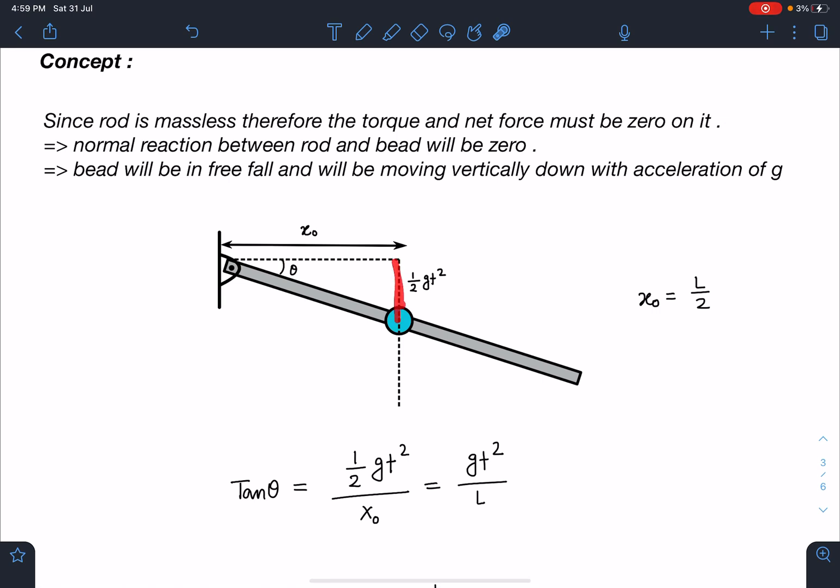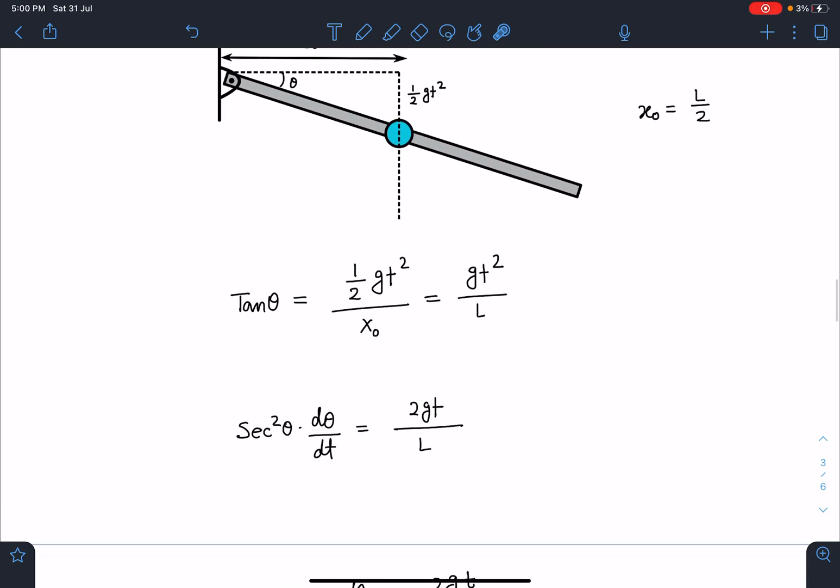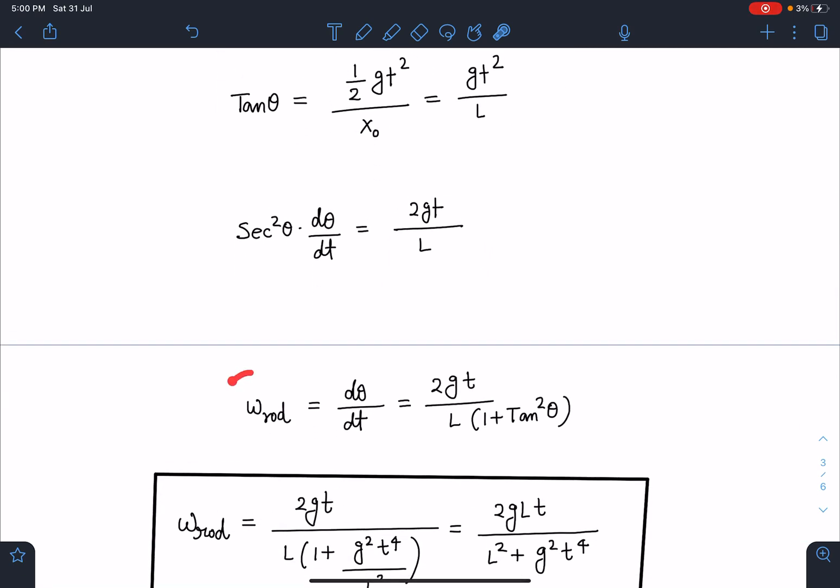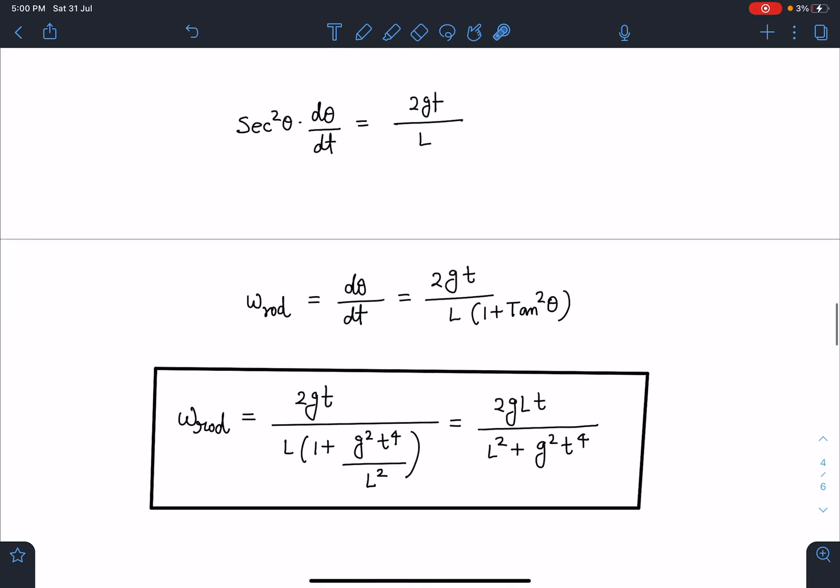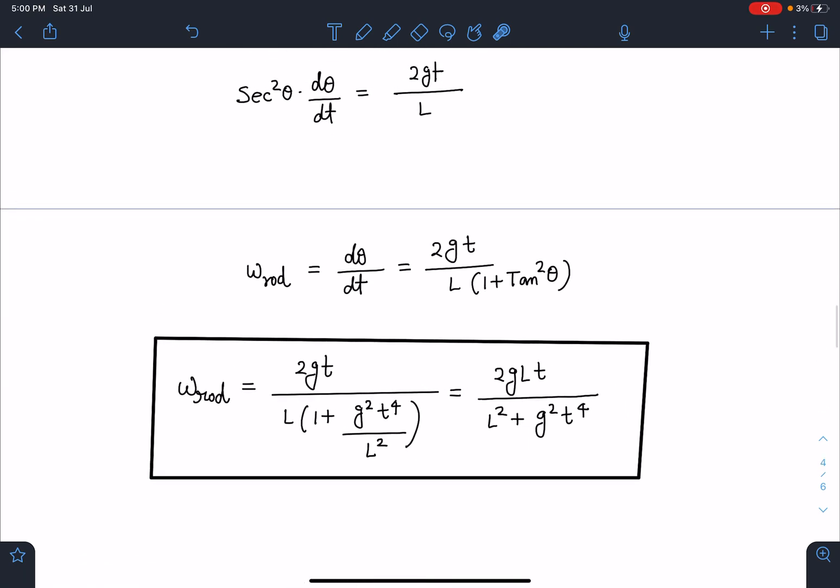At any time t, let's say this angle is theta - the angle rotated by the rod. This distance must be (1/2)gt² and this is x₀ which is given as L/2 in the problem. So tan θ = (1/2)gt²/x₀. Substituting x₀ value, half gets cancelled, we get tan θ = gt²/L. Now if I differentiate this, I'll be getting sec²θ (dθ/dt) = 2gt/L. So dθ/dt is the ω of rod, which I can write as ω = 2gt/L × 1/(1 + tan²θ). Substituting tan θ = gt²/L, on simplification I'll be getting ω_rod = 2gLt/(L² + g²t⁴).